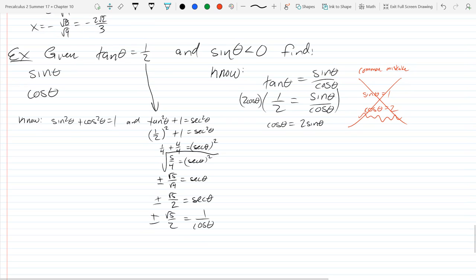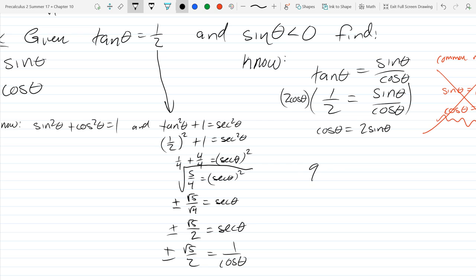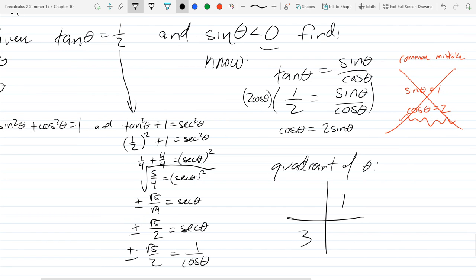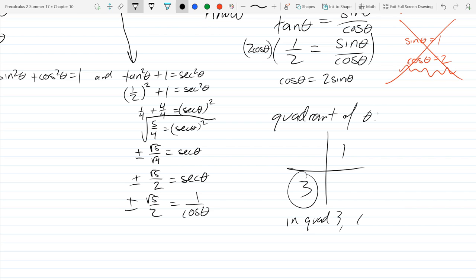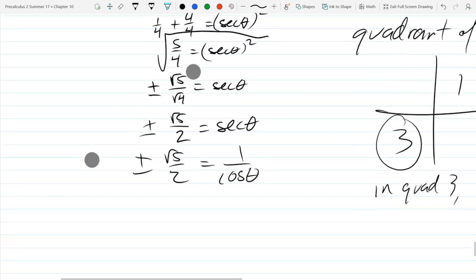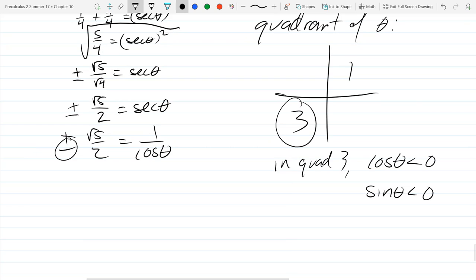We've got to decide what quadrant are we in. So quadrant of theta. So tangent positive right here, that puts us right away. Tangent is positive in one and three. Sine negative, that only happens in three and four. So that definitely puts us in quadrant three. So what happens in three? Everybody's negative. So cosine is negative and sine is negative. So this cosine right here, I'm going to have to go with negative.